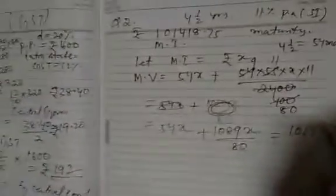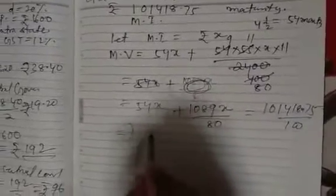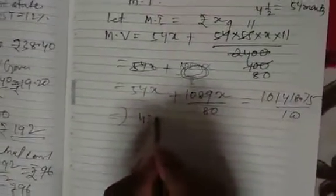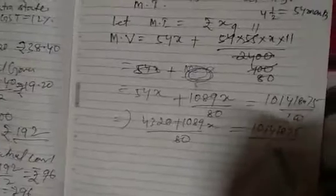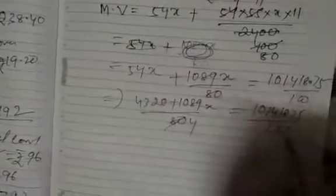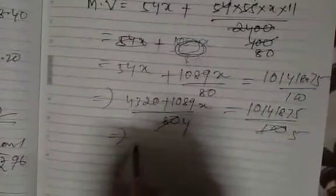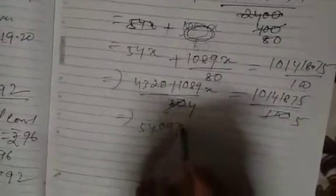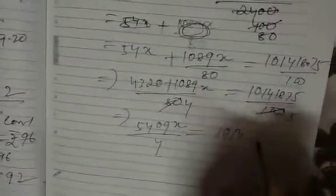Or you can omit this one by 100 and this you simplify by taking out LCM. This is by simplifying, 4, 24, 25 and this upper one is your 5, 4, 0, 9X by 4 is equal to 1, 0, 1, 4, 1, 8, 7, 5 by 5.